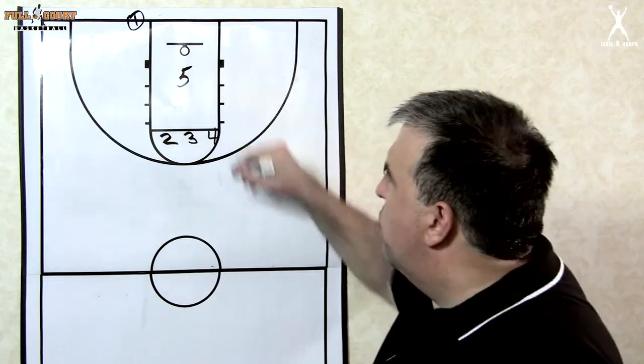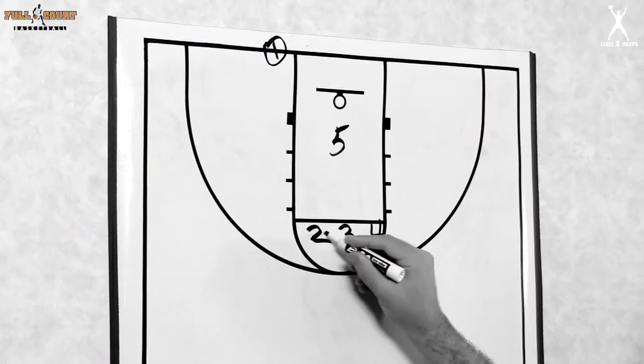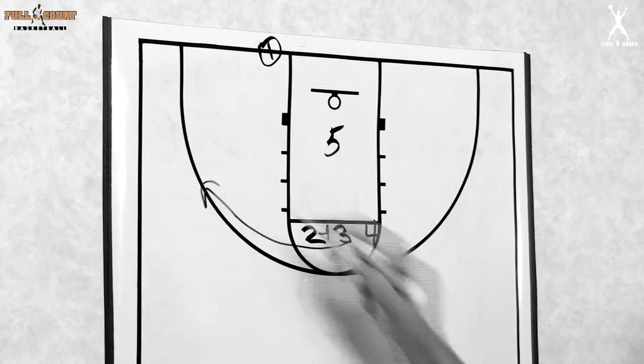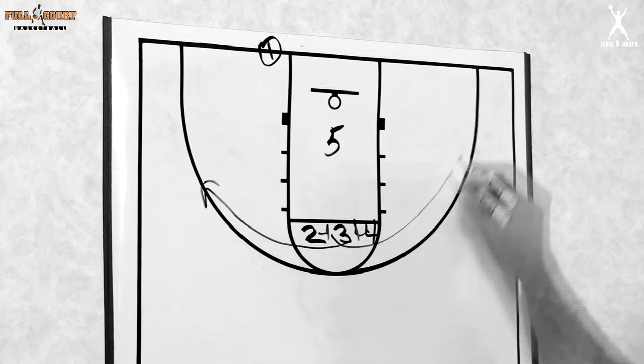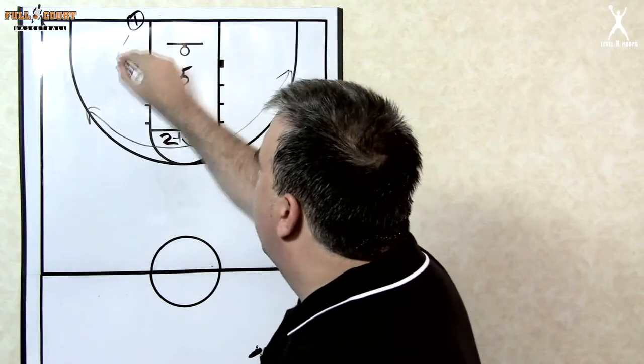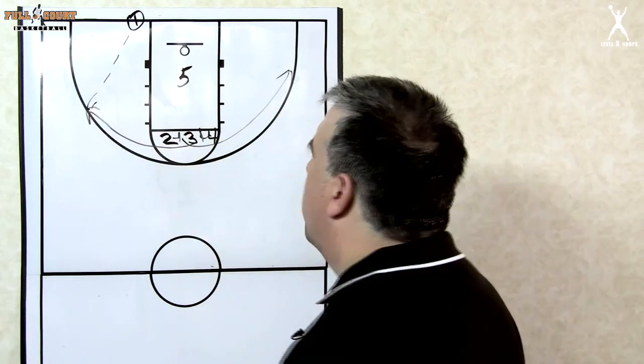If one can't directly throw it to five, we've got two screening for three who's coming out to the wing, and then four screens for two coming out to this corner. So if the lob's not there, we're going to throw it to three in the corner.